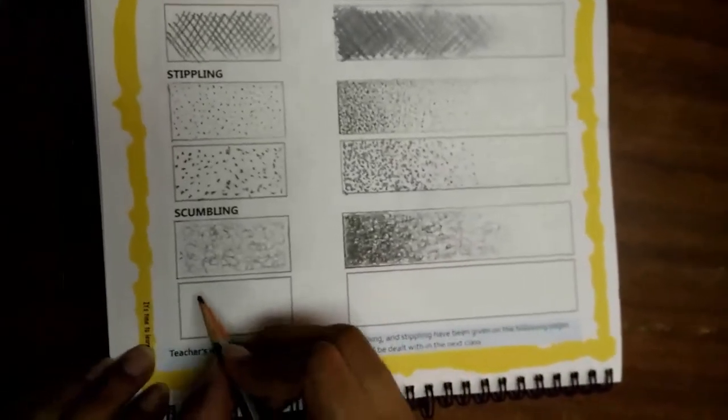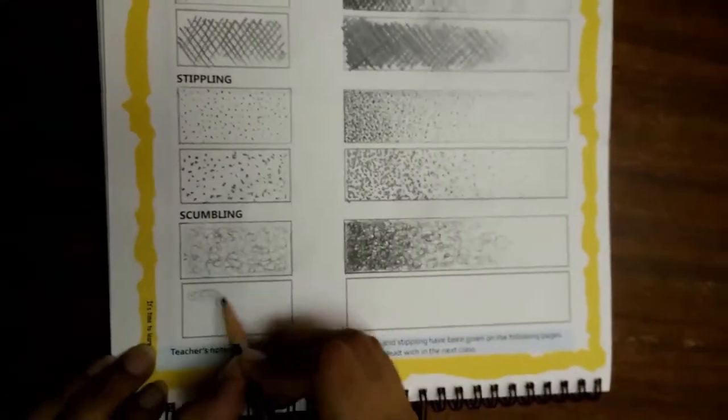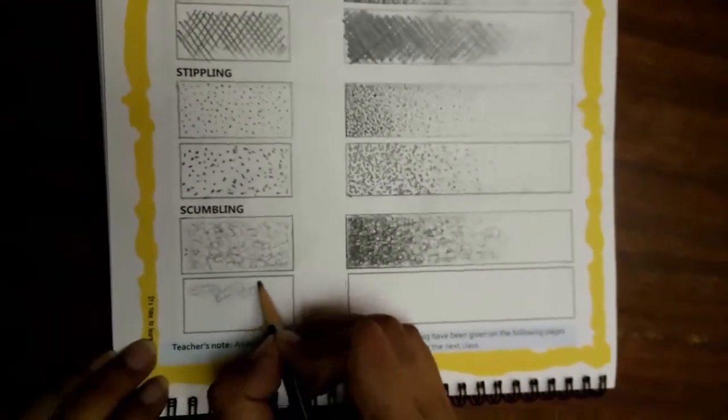And last, we have the scumbling technique. That is, making continuous irregular marks with pencil.